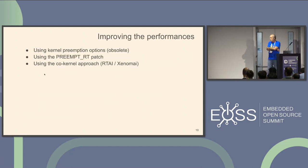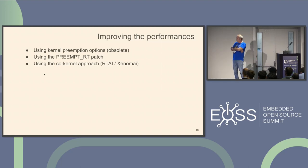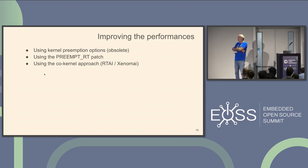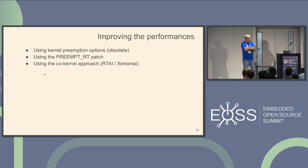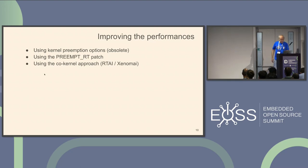There are several ways to improve the performance of the Linux kernel. The first one is to use the preemption option, which is obsolete but the options are still in the kernel. Use the Preempt RT patch, and use the co-kernel approach with RTAI or Xenomai — we will focus on Xenomai. But RTAI is still a project in Italy, still available, but focused on the x86 architecture.